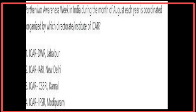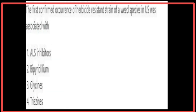Parthenium Awareness Week in India, observed during the month of August each year, is coordinated and organized by the Directorate of Weed Research, Jabalpur. The first confirmed occurrence of a herbicide-resistant strain of a weed species in the U.S. was associated with triazines.